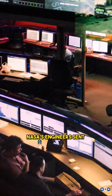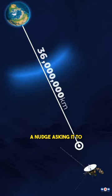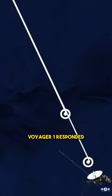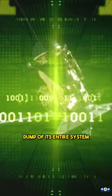In March, NASA's engineers sent a poke to Voyager, a nudge asking it to try something new, and guess what? Voyager 1 responded, sending back a memory dump of its entire system.